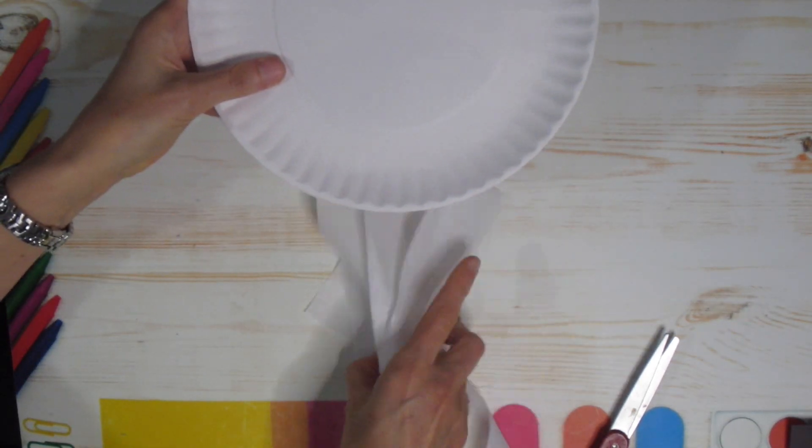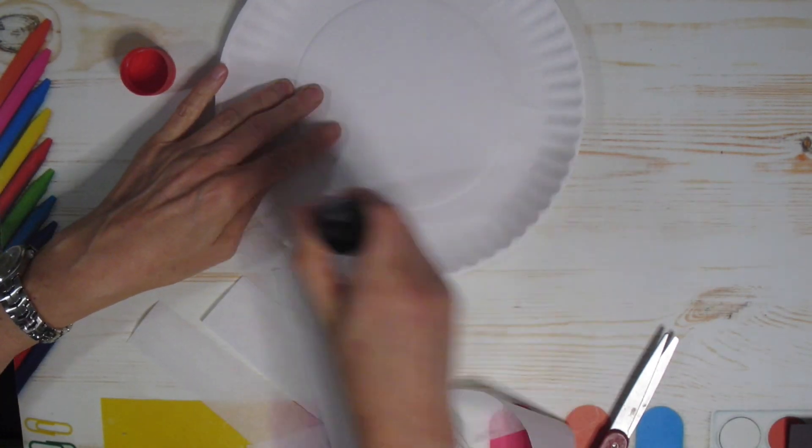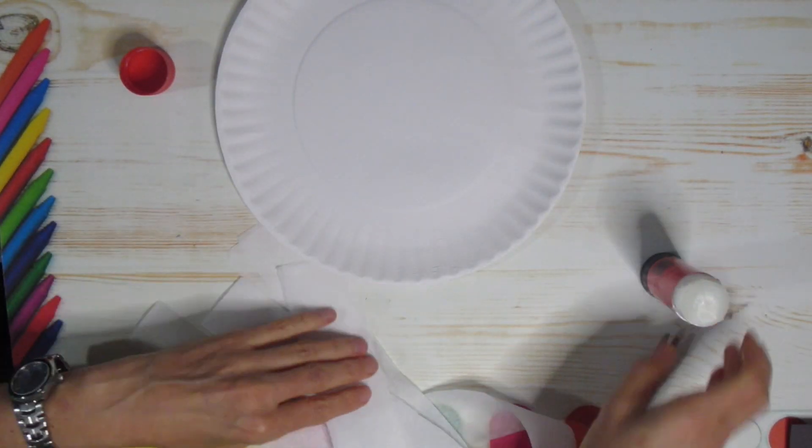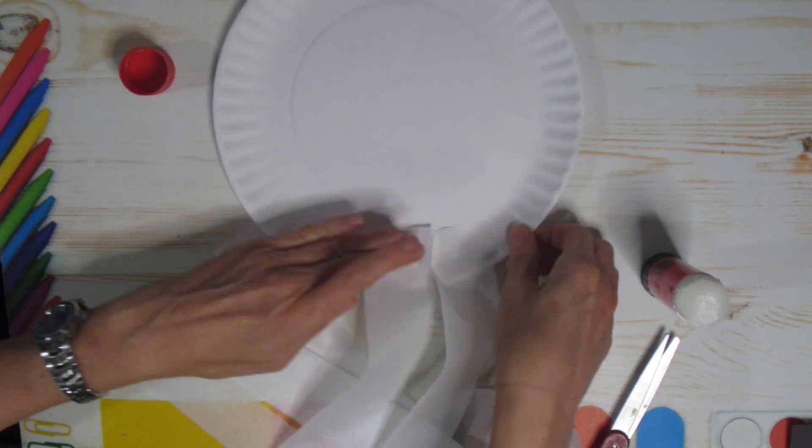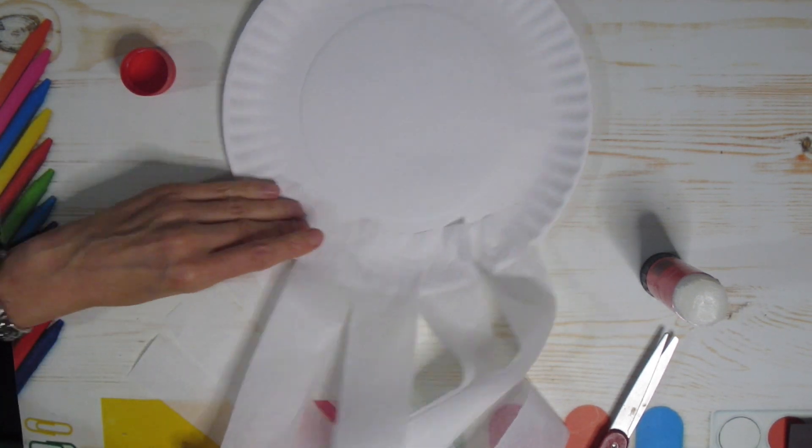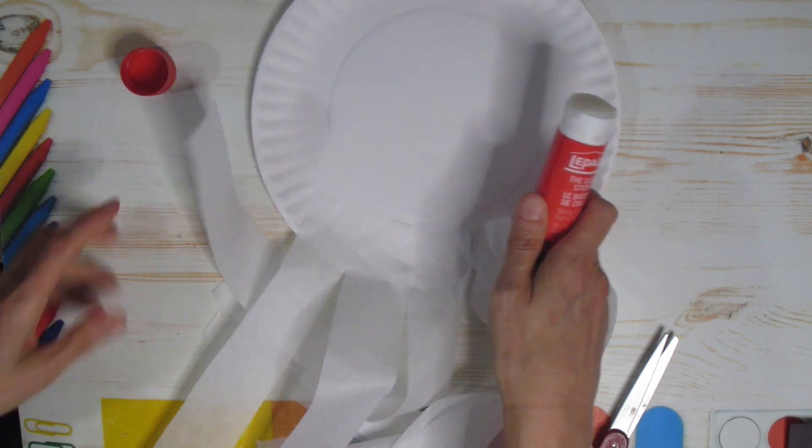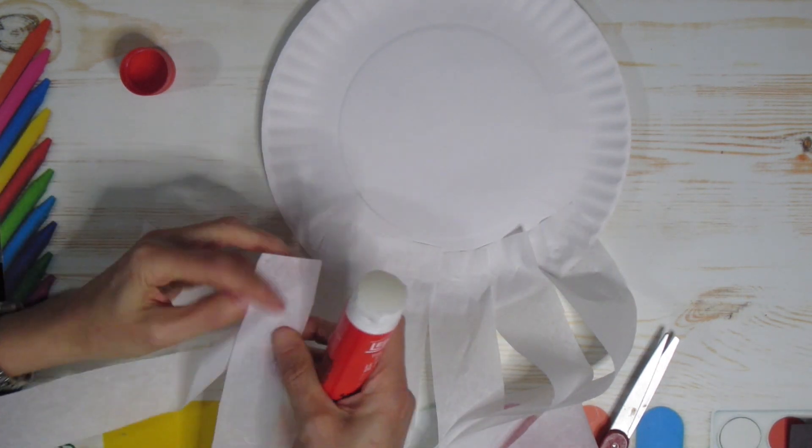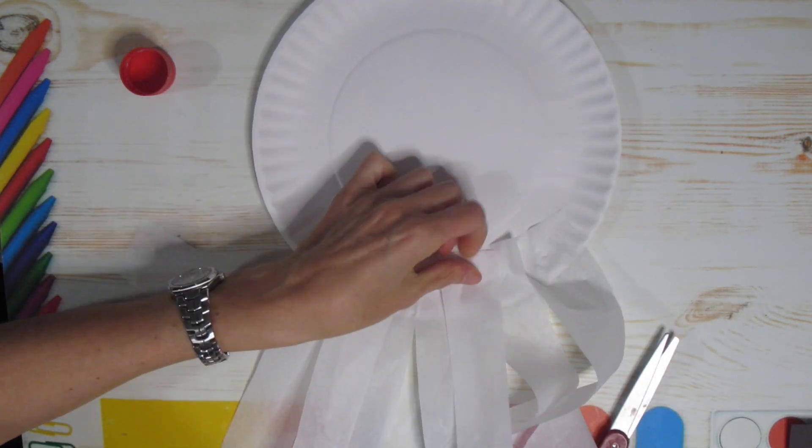Once you have those strips you're going to grab that paper plate. You're going to turn it over. Make sure you're near the bottom and you're going to just put some glue right on that paper plate and just place that tissue paper right on top. So you see it's pretty easy to get the tissue paper to stick. So I'm going to put my first layer down and then once I have that first layer those little extra pieces I can just layer on top of my first layer just in between each one.